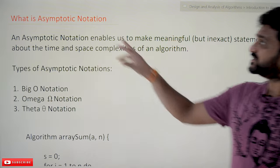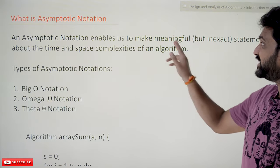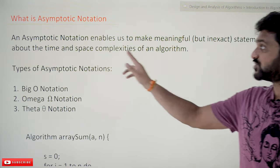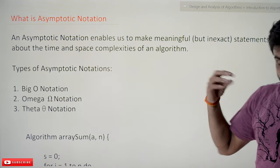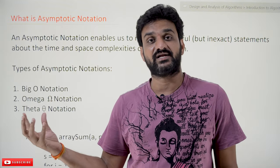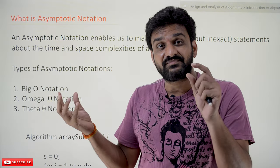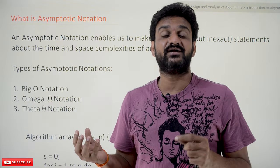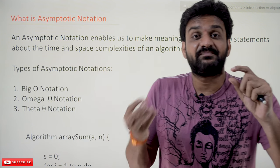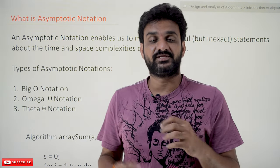So what is asymptotic notation? Asymptotic notation enables us to make meaningful but inexact statements about the time and space complexities of an algorithm. Given an algorithm, if you find the time complexity and space complexity, we can notate those using certain notations. With that kind of notation, we can give a meaningful statement about an algorithm.